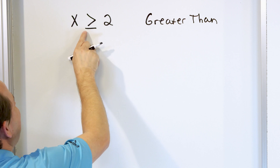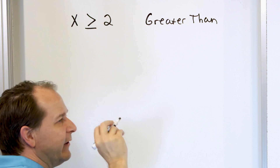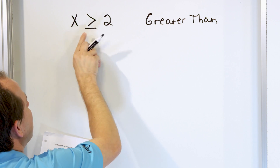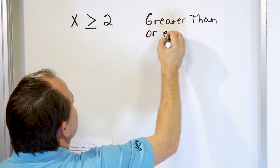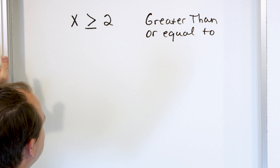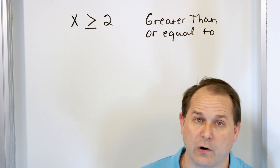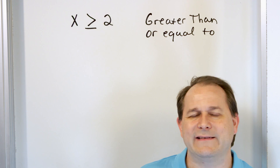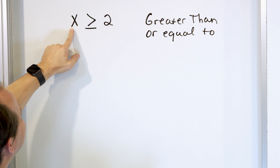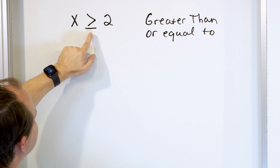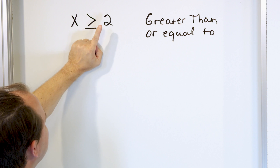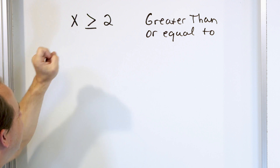So x is greater than two, but we have a little underline underneath it. You know how an equals sign is like two lines — this is very similar. The top part means greater than, but the bottom part means equal to. So what this means is that x can no longer take on any value. Like with an equal sign, if x equals four, x has to be four. But here we're saying x is greater than, or equal to, two.